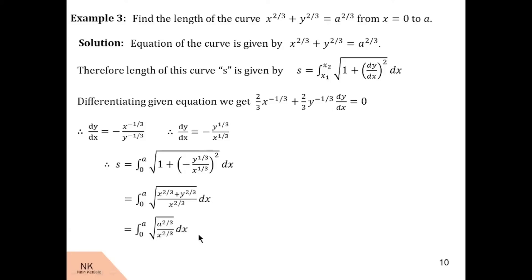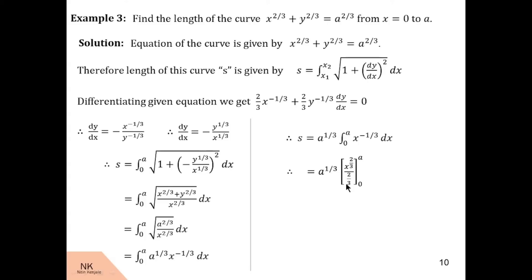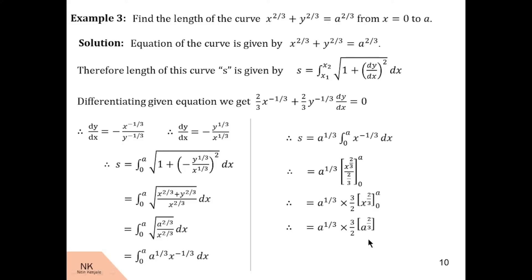Taking x^(1/3) to the numerator gives x^(-1/3). Taking the constant a^(1/3) outside, the integration of x^(-1/3) is x^(2/3) / (2/3). Substituting the limits: when x = a we have a^(2/3) / (2/3), and when x = 0 the result is 0. The 2/3 in the denominator becomes 3/2, so we have a^(1/3) · (3/2) · a^(2/3). Since a^(1/3) · a^(2/3) = a, the length of the astroid from x = 0 to x = a is 3a/2.